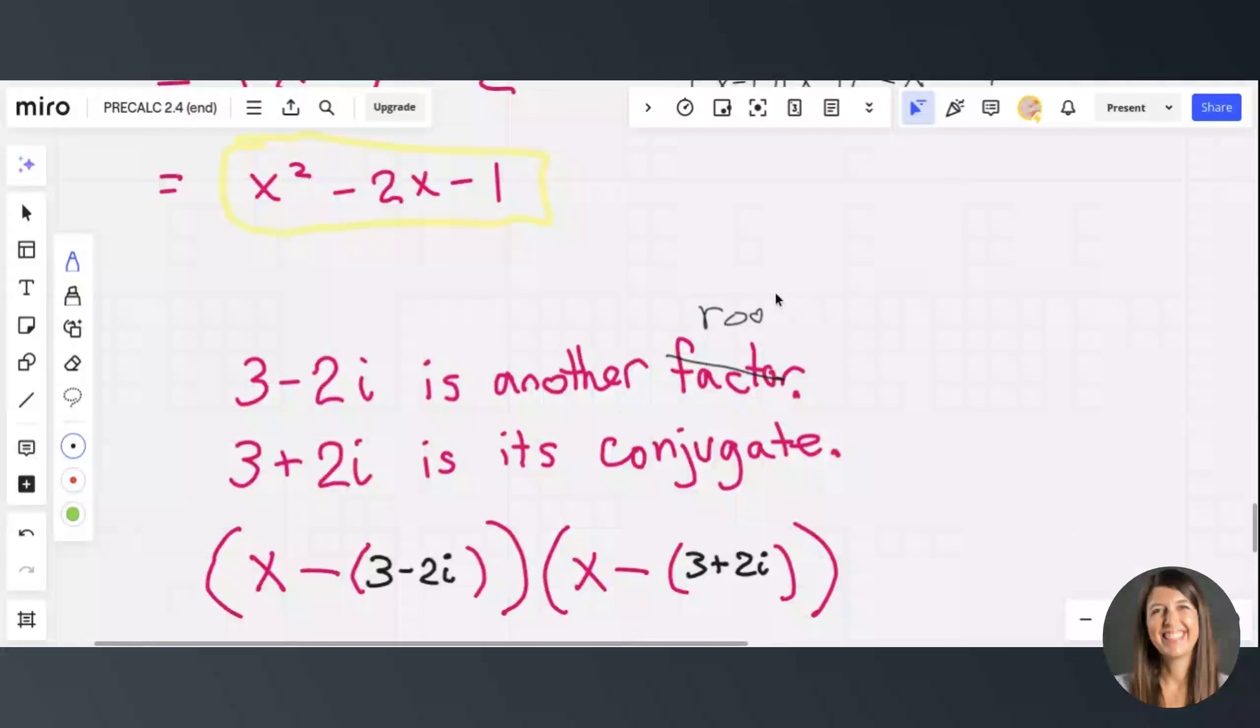then so is its conjugate, 3 plus 2i. So these are conjugate pairs.